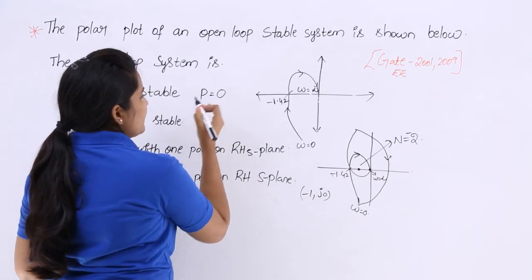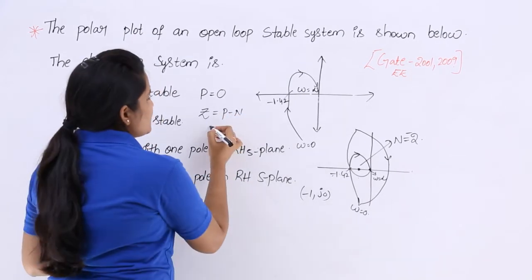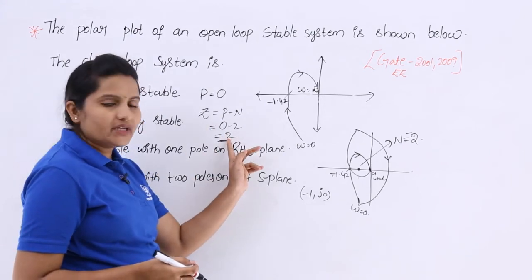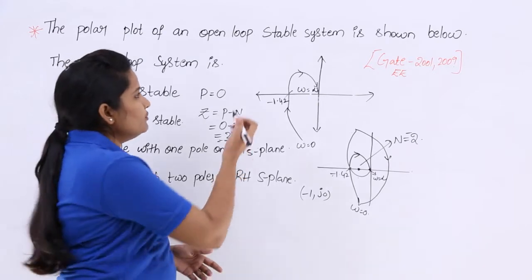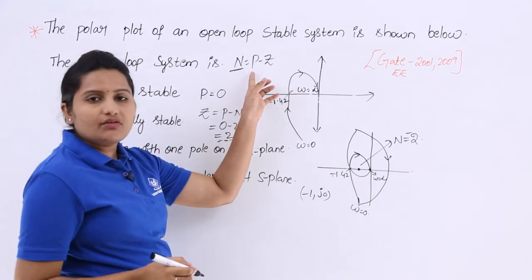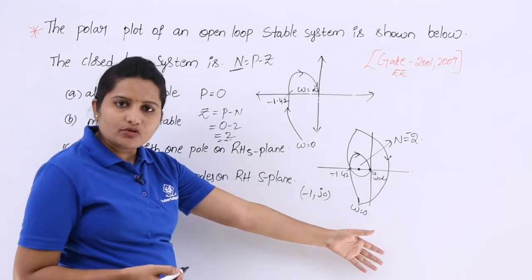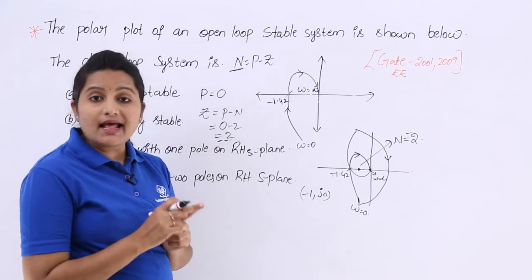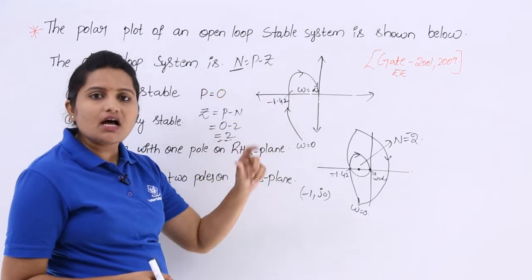Using the Nyquist criterion: N is equivalent to P minus Z, where N is the number of encirclements, P is the number of right-sided open loop poles, and Z is the number of zeros (closed loop right-half plane poles). With N equals 2 and P equals 0, we get Z equals P minus N equals 0 minus (minus 2) equals 2. So Z is equivalent to 2, meaning there are 2 right-sided zeros.